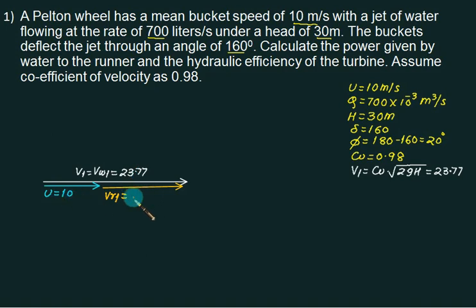The difference of V1 and U is called Vr1, which is 23.77 minus 10, that is equal to 13.77. So this completes the inlet triangle. Now the jet is deflected by 160 degrees, so this makes an angle of 160 degrees. That is why the interior angle is 20 degrees. Losses are not given, so we assume Vr2 is same as Vr1, equal to 13.77.